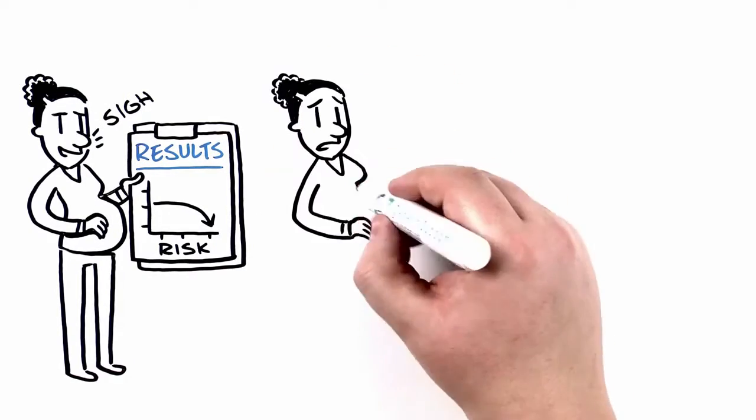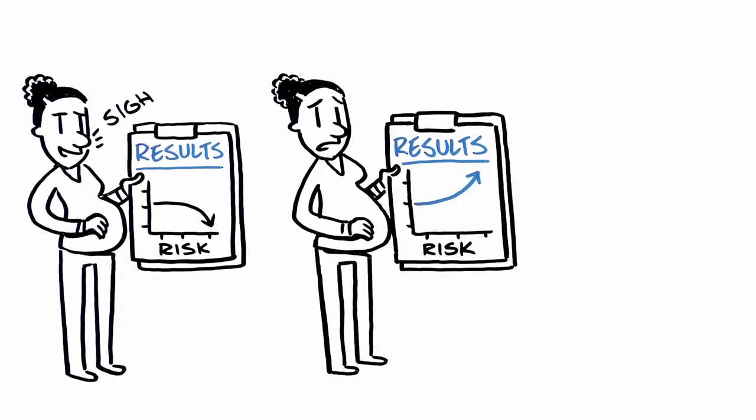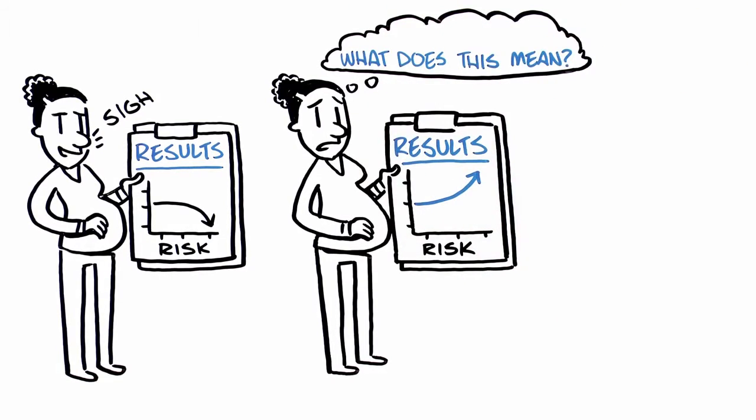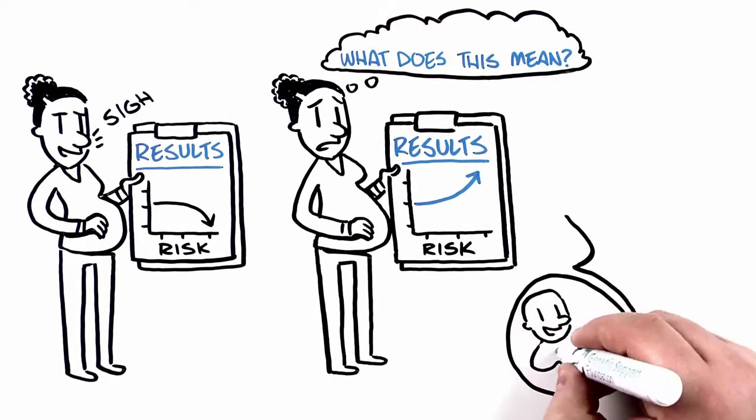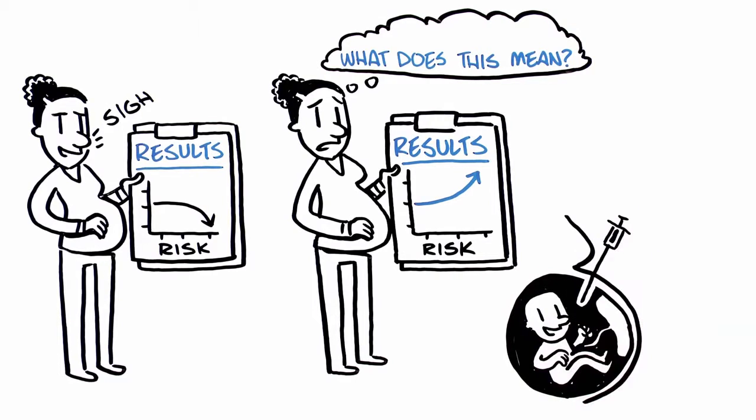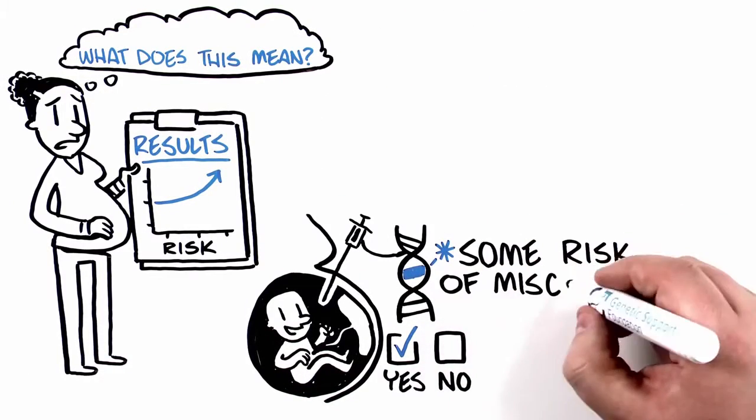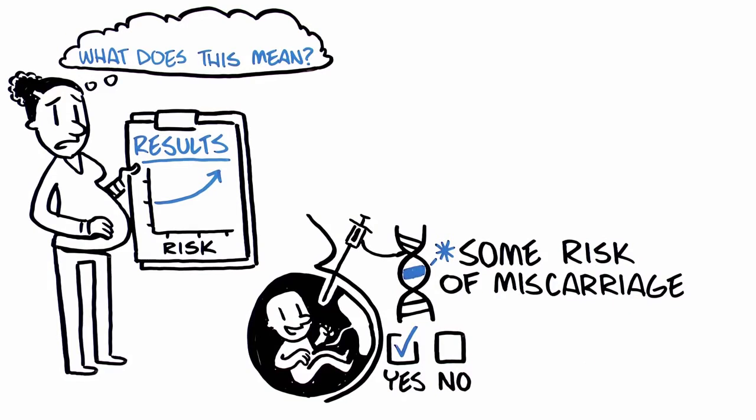However, if the test indicates an increased risk, it may create worry and uncertainty about what to do next. Follow-up testing, such as amniocentesis, that can tell for certain whether or not a genetic condition is present in the baby does present some risk to the pregnancy, including an increased risk of miscarriage. The risk of miscarriage from amniocentesis is less than 1%.